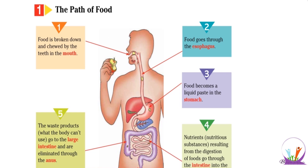The food will go from the mouth into the esophagus, then from the esophagus to the stomach, then from the stomach into the small intestine. The food digested in the small intestine is called nutrients, and the nutrients will go to the blood and to all organs of the body. The non-digested food will go into the large intestine and then outside the body.